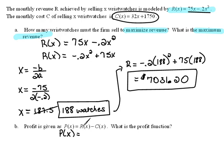The profit will equal the revenue, which we know to be 75x minus 0.2x squared. Now we're going to subtract from that the cost function. The cost function they identified as 32x plus 1750.